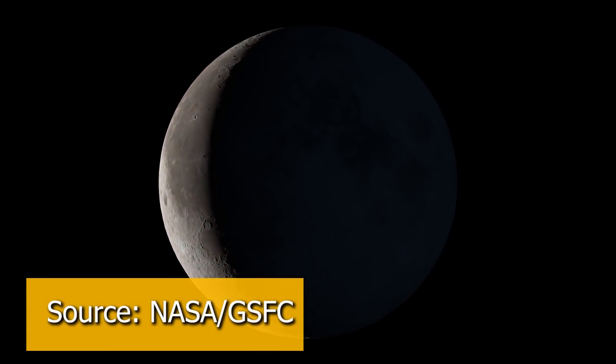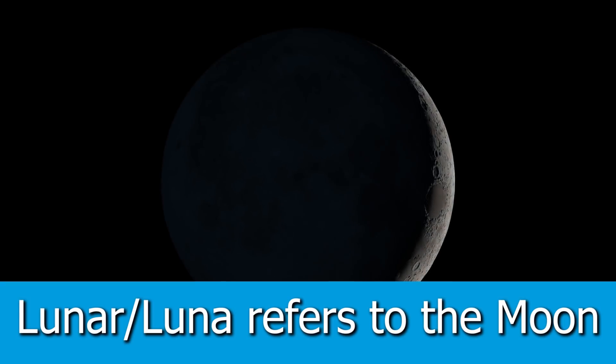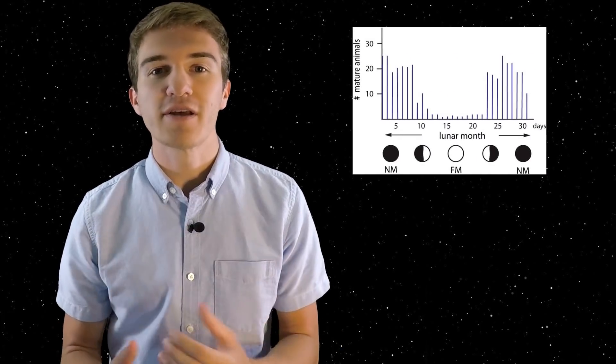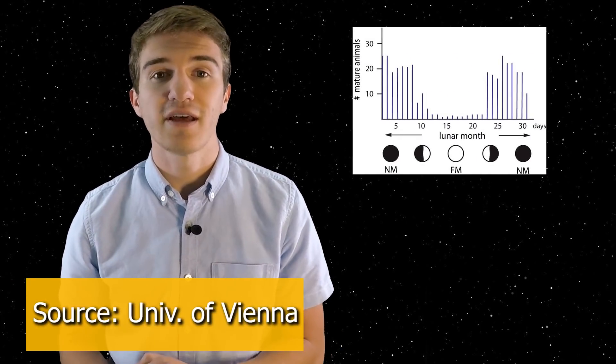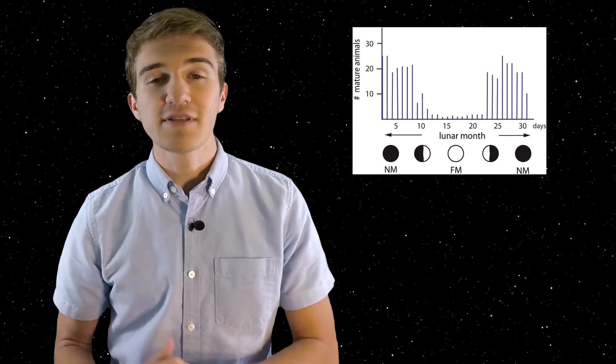Some marine organisms have something called a circa lunar clock. Lunar refers to the moon. The circa lunar clock helps organisms maintain how often they need to sleep or reproduce. Some scientists believe this is a major influence because the moon impacts the tides of the sea.